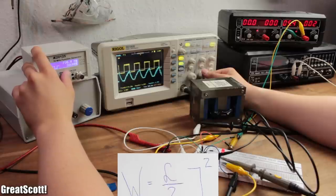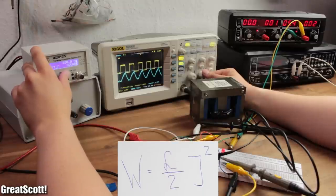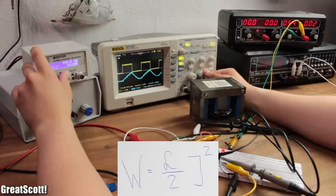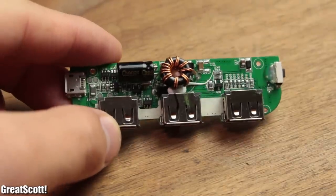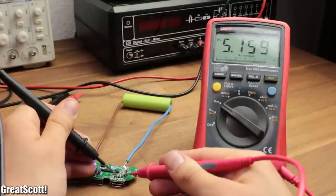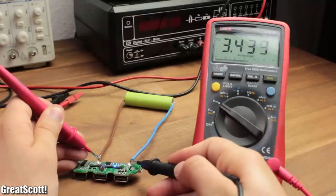The energy stored in an inductor is L divided by 2 multiplied by I squared. And we use this energy, for example, in boost converters to get 5V out of 3.7V batteries.